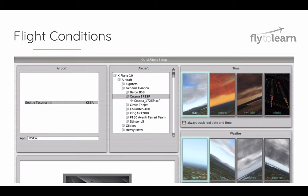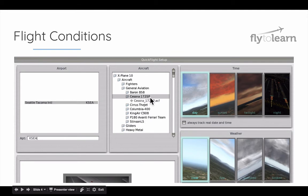To get to this window, you'll select File, Quick Flight Setup. Find the Seattle-Tacoma International Airport by typing KSEA into the airport search bar. To select your aircraft, the Cessna 172SP, double-click on General Aviation. For time of day and weather, choose Day and Clear.